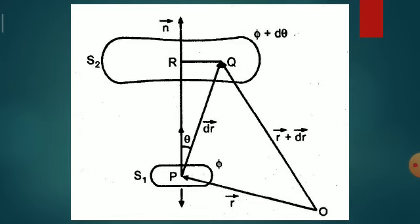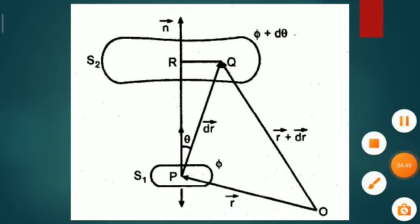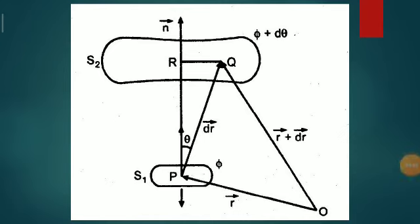The total differential of phi is expressed by d phi equals curly phi by curly x dx plus curly phi by curly y dy plus curly phi by curly z dz. In figure, O is origin, P and Q are two points on the level surfaces S1 and S2.